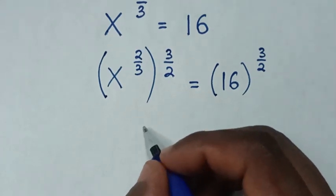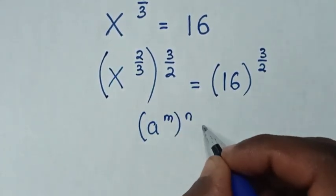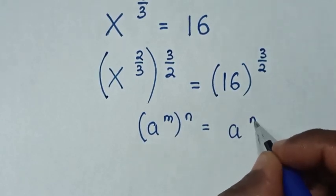Then from here we will apply the exponential rule, which is a to the power of m in brackets to the power of n equals a to the power of m times n.